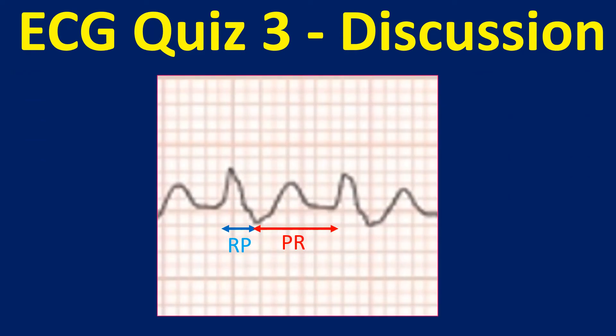This pattern can be seen in atrioventricular nodal reentrant tachycardia, or AVNRT. Here the RP is shorter than PR — from the retrograde P to the next R wave — qualifying for the short RP tachycardia of the slow-fast variety of AVNRT.